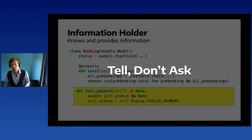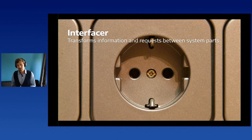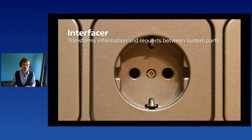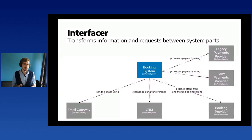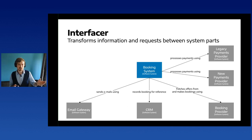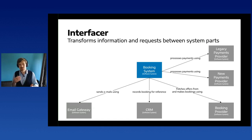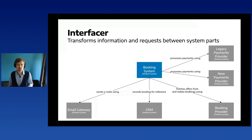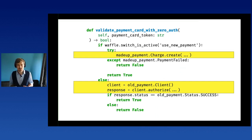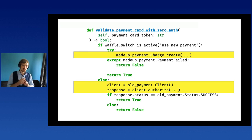The second role stereotype is the Interfacer — something that transforms information and requests between system parts. We don't have it in the current code, but you'll see it after refactoring. The codebase screams for interfacers because it has many external systems to integrate with. For emails it's less critical since Django handles that, but for the custom CRM, booking providers, new payment provider, and legacy payment provider, the code would benefit greatly. Currently, we handle different APIs and different error-signaling styles under if-statements repeated throughout the codebase.